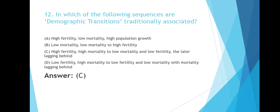Option D: Low fertility, high mortality to low fertility and low mortality, with mortality lagging behind. The correct answer is Option C — high fertility, high mortality to low mortality and low fertility, the latter lagging behind.